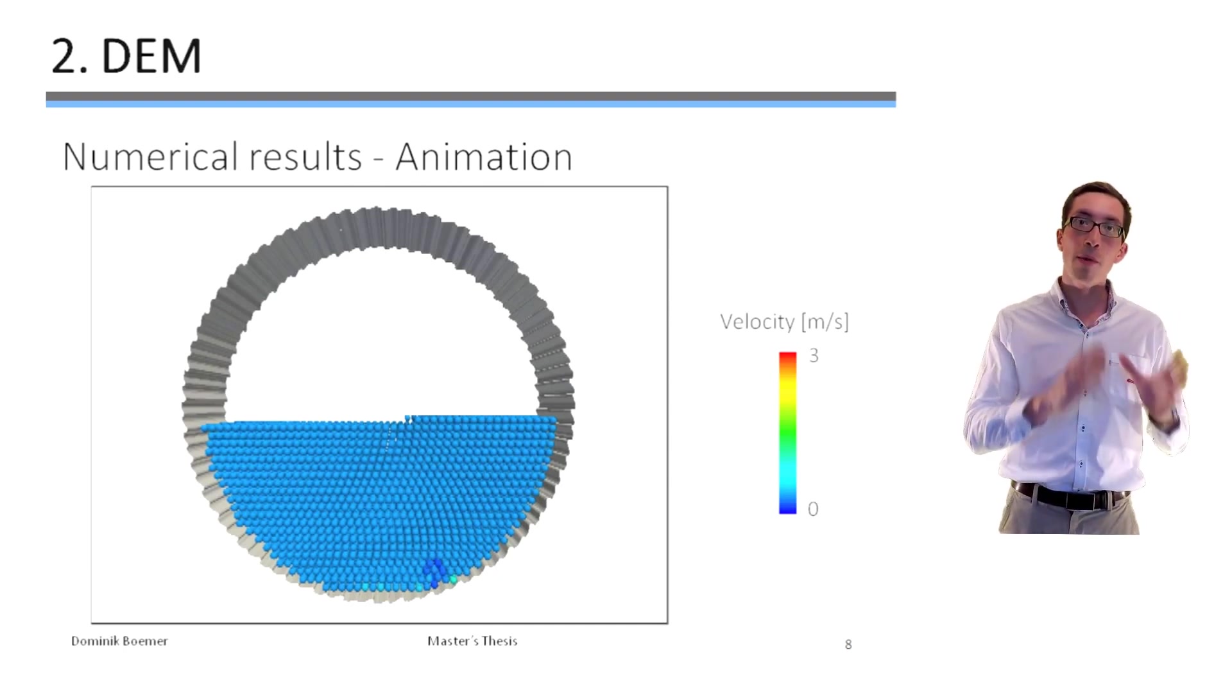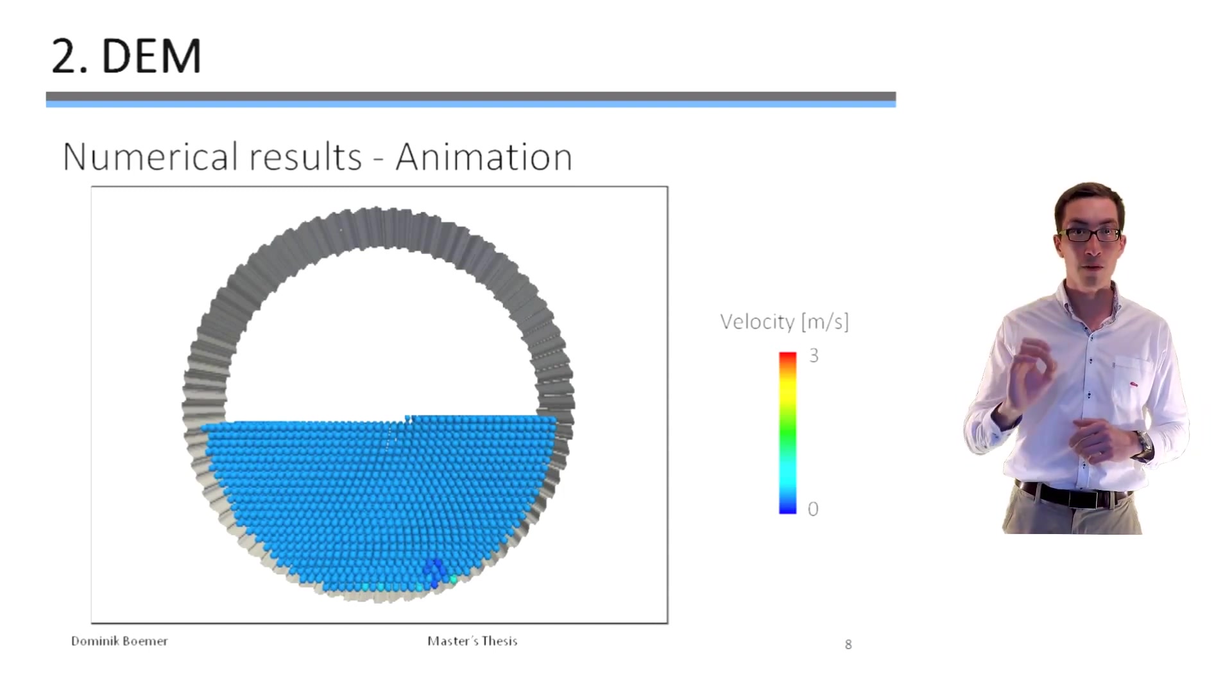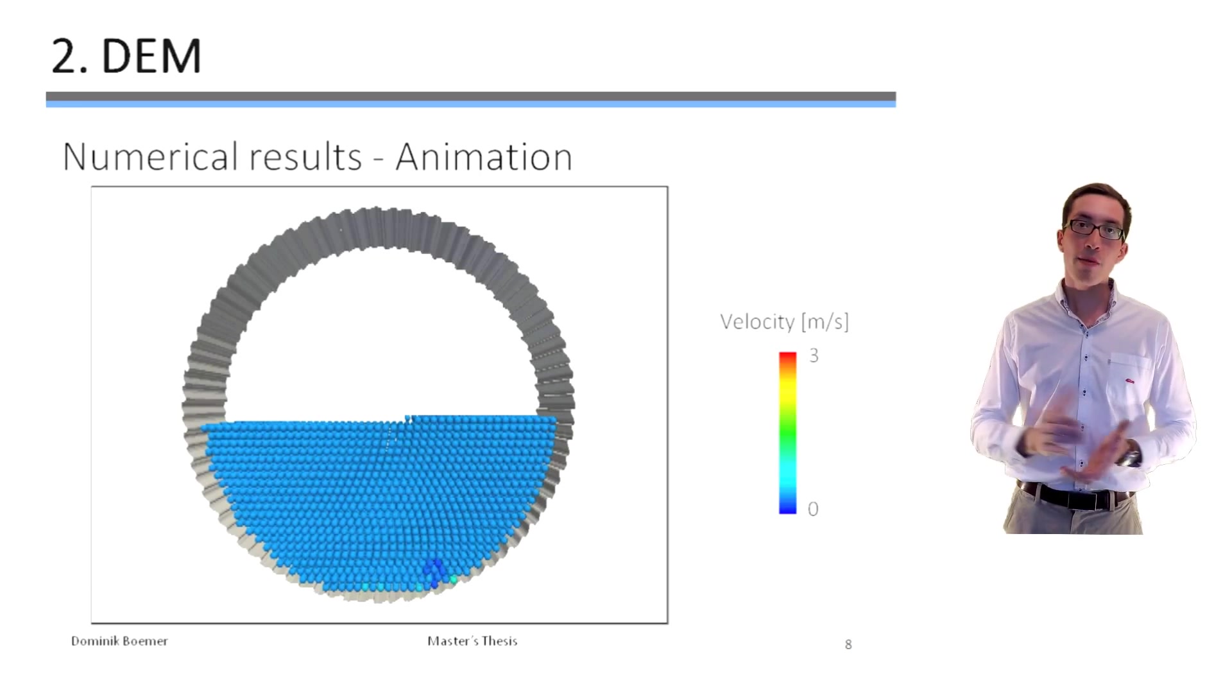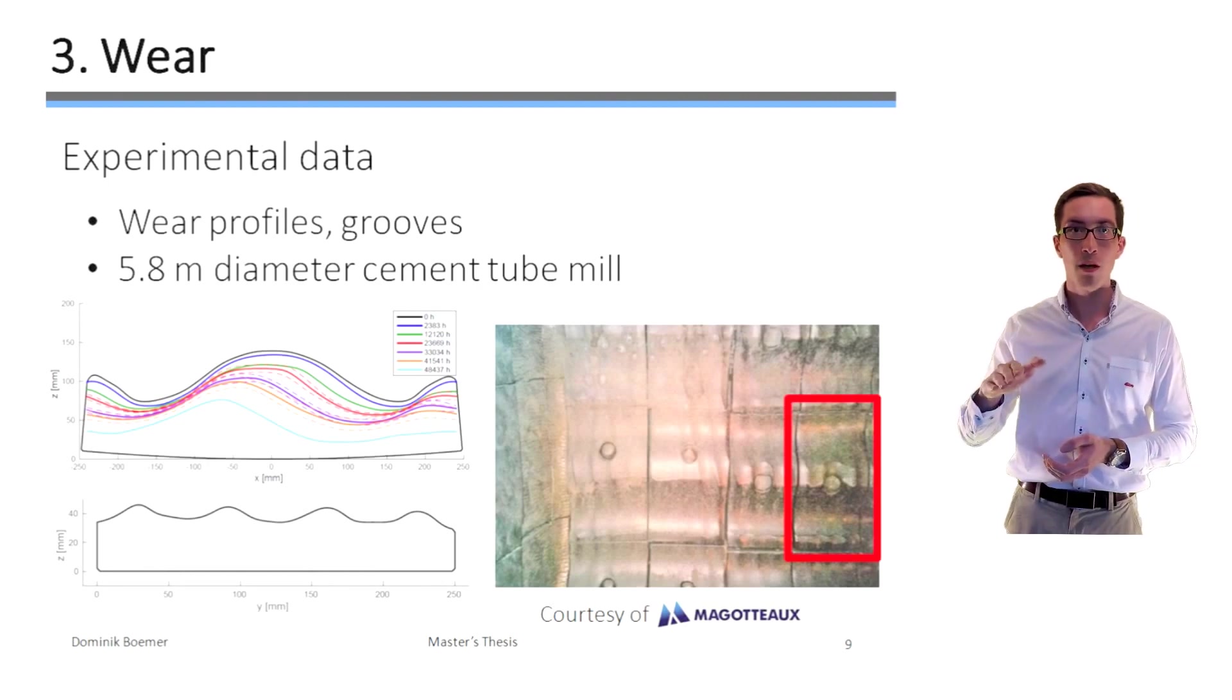So now we know what the ball mill is, but we also know that the discrete element method can simulate the motion of the balls with confidence. The next step is therefore to determine the wear of the liner plates. This means the change in their shape over time due to the collisions with the metal balls.